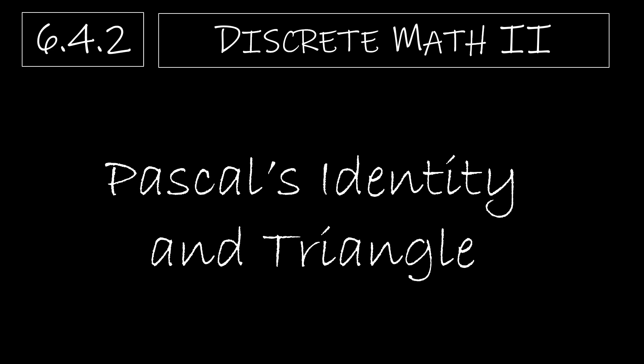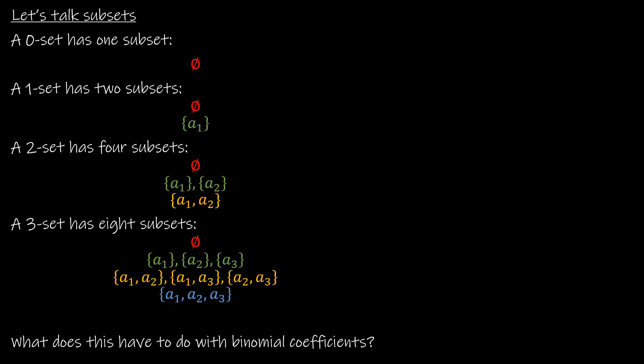We're going to continue our study of binomial coefficients now by looking at Pascal's identity and triangle. To help this make sense, we are going to take a look at subsets. Remember when we're talking about subsets, we have an original set, and a subset includes only values from the original set, anywhere from zero of those values — the empty set — all the way up to all of the values, which would be equivalent to the set itself.